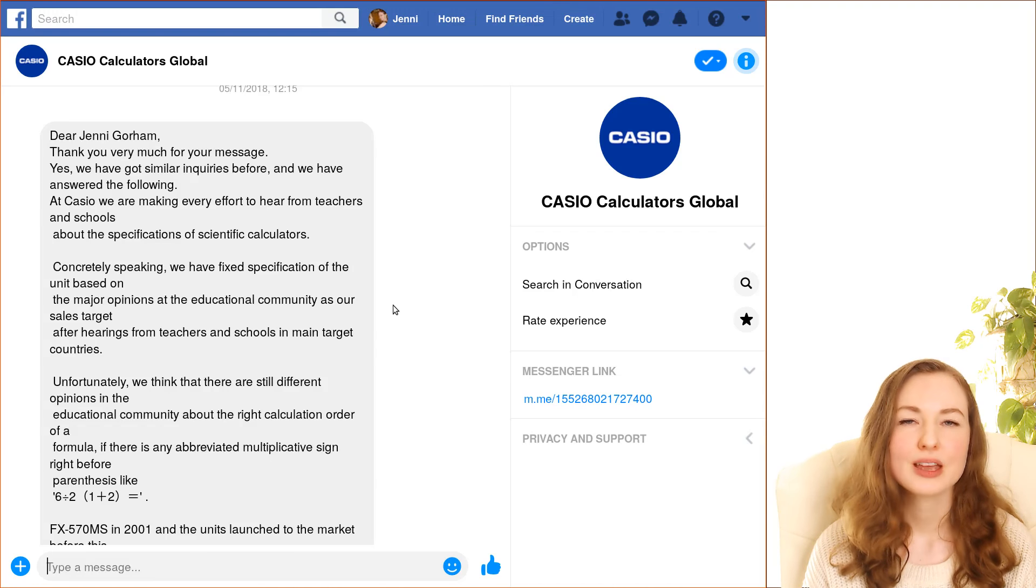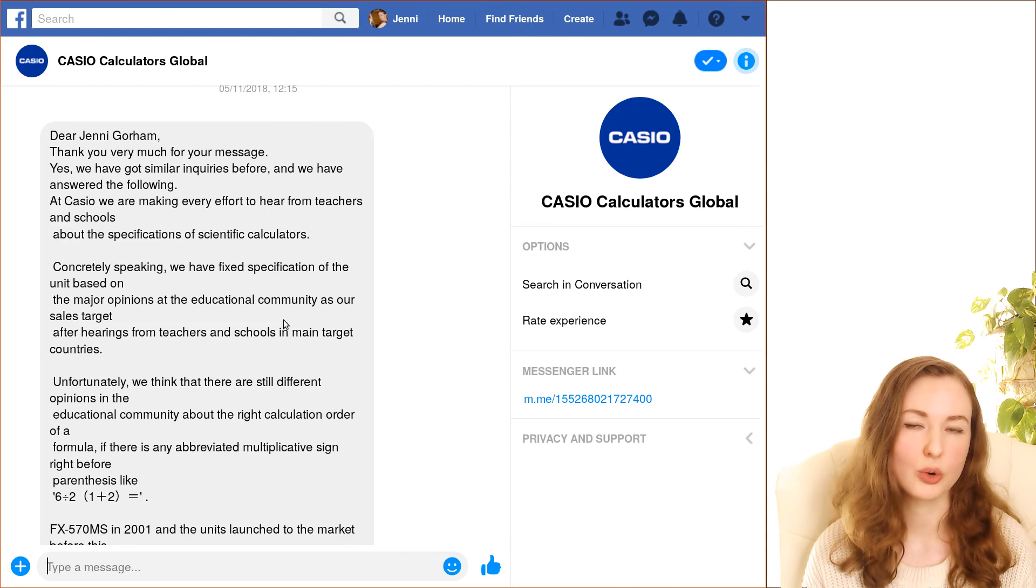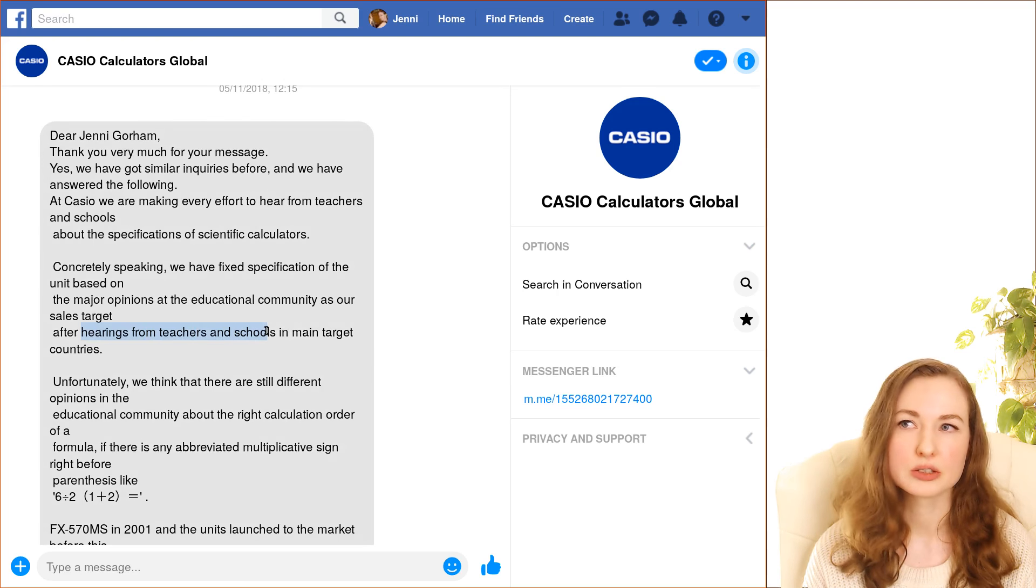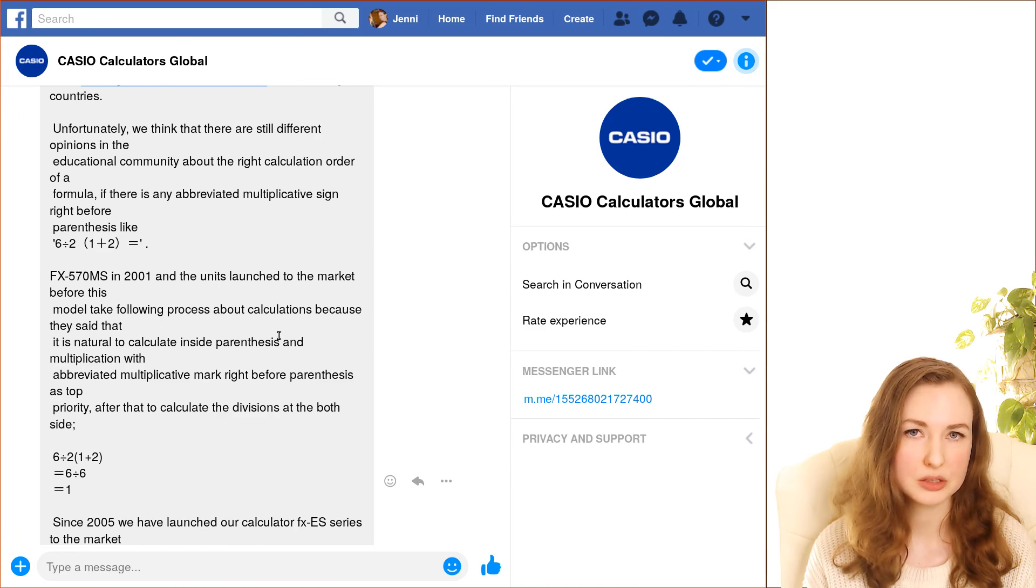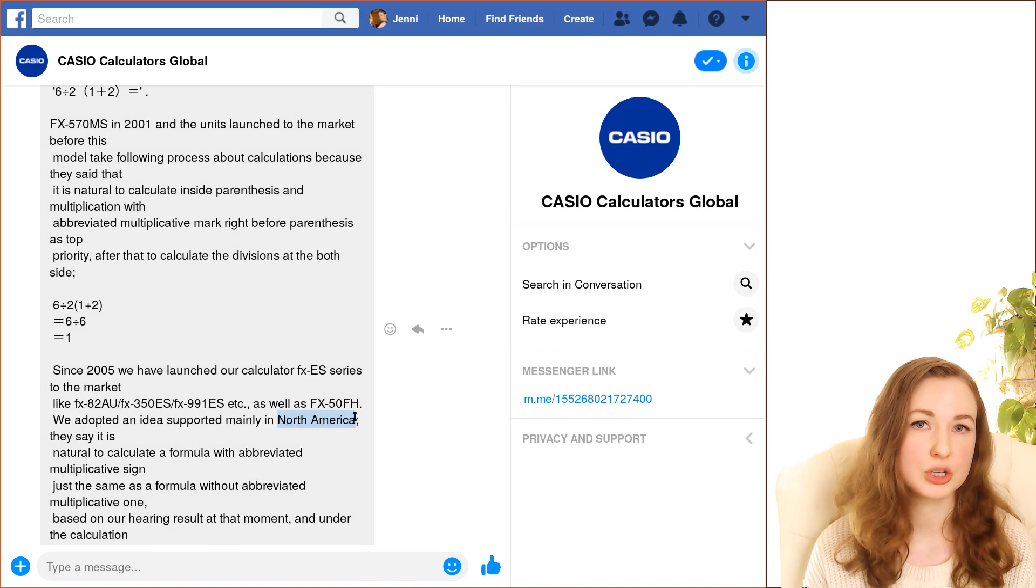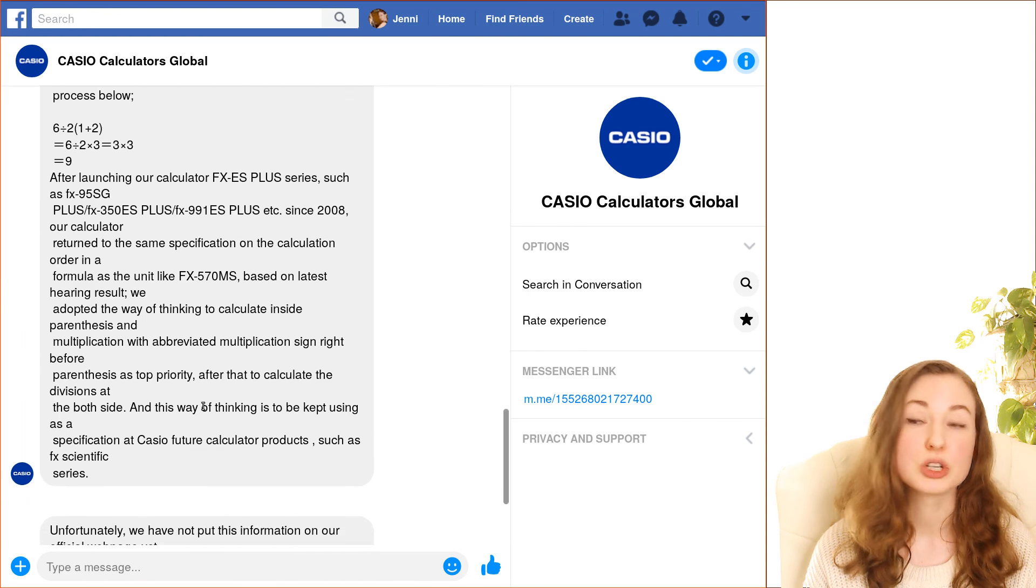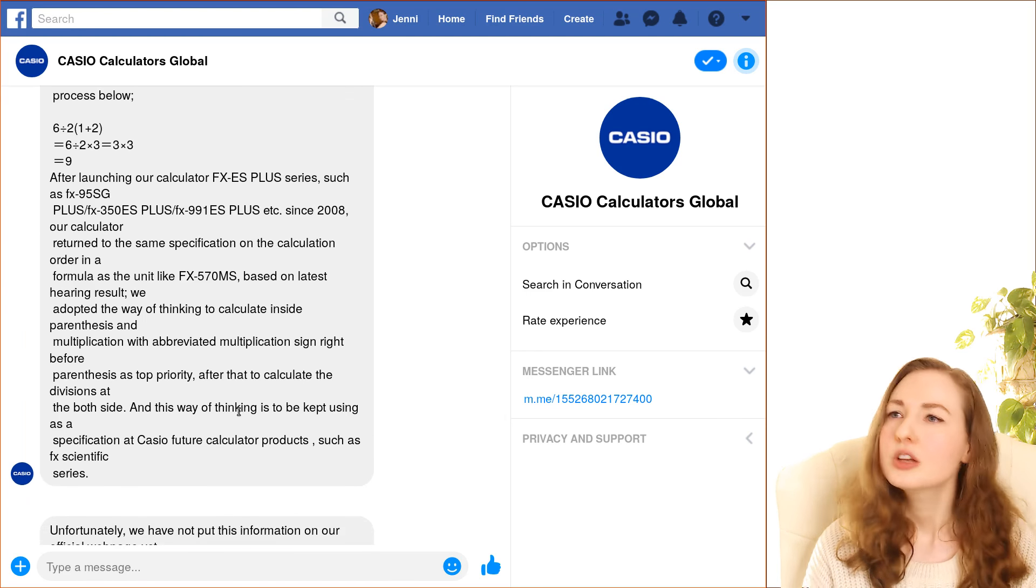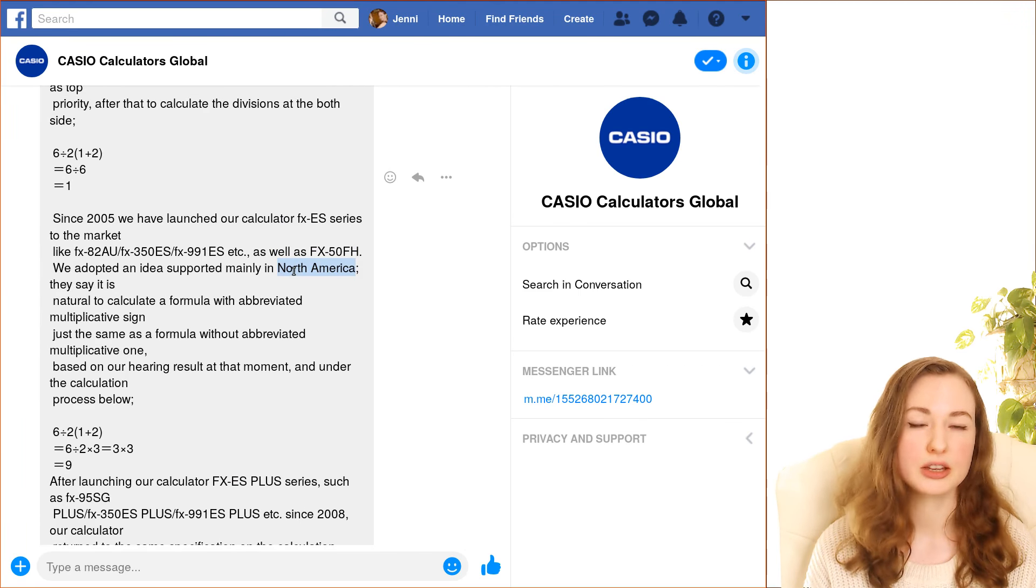So why did this switch happen? Well I've been corresponding with a representative from Casio who was saying that basically they make their calculators according to what teachers want. So they do various hearings with teachers in schools and they were saying that they started out with PEJMDAS but then they switched to PEMDAS because teachers, and mostly teachers just from North America, wanted them to switch to PEMDAS. But now actually, after hearing from a wider range of people, they've switched back to PEJMDAS. So I found it quite interesting that they said that it was just North American teachers who were pushing this idea of PEMDAS.